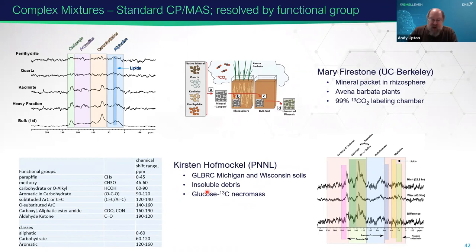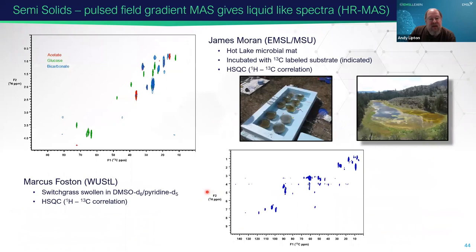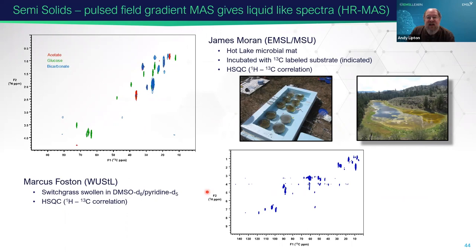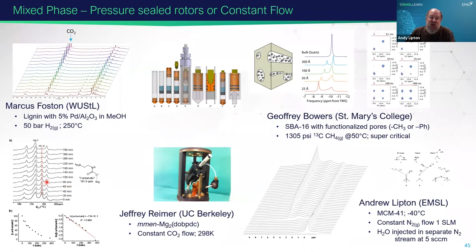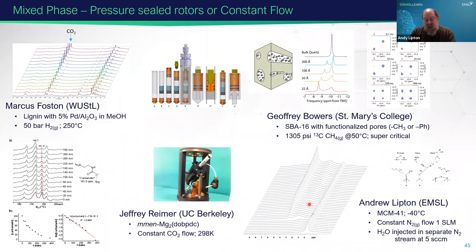We've done some plant cell walls where we get nice 2D spectra to define structural interactions — including HSQCs on the cell walls. Developed at EMSL are sealed rotor systems for doing in-situ reaction chemistry — we've done liquid lignin reactions and cellulose degradation, gas capture in pores to measure pore size and flow, CO2 capture experiments, and ice nucleation experiments looking at different proton species being formed as water collects into clusters.